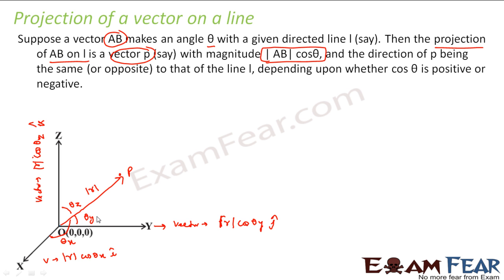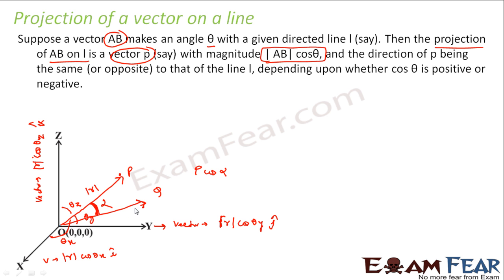So the projection is: if you have some vector and you want to project it onto a particular line. We projected this vector onto x, y, z lines, but we can also project onto some other line. For example, if I have another vector q and the angle between p and q is alpha, and I want to find the projection of p on q — the magnitude will be p cos alpha.